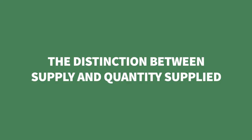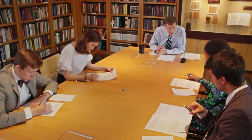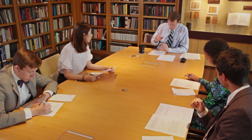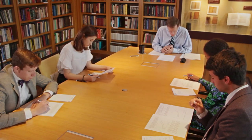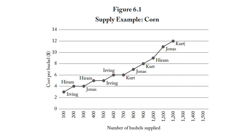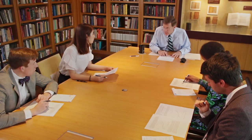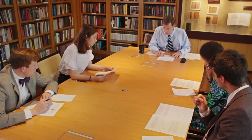Now let's get to the distinction between supply and quantity supplied. As price rises from $3 to $6, quantity supplied increases from 100 to 700 bushels. But what happens to the supply? Nothing — it's constant. The supply is the entire set of relationships represented on the graph — the whole curve. As price changes, quantity supplied will change, but not the supply curve. Everybody's cost of production stays the same. So a price change gives us a change in quantity supplied, but no change in supply.